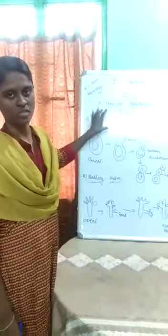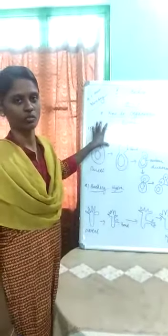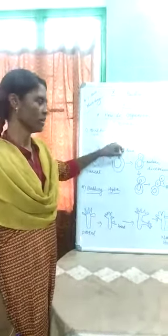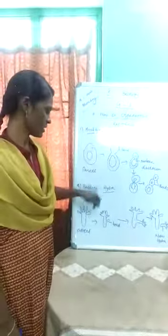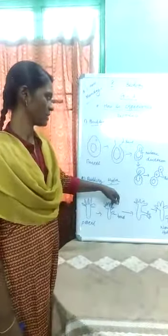Two types of organisms reproduce by budding. The best example is yeast, and the second example is hydra.